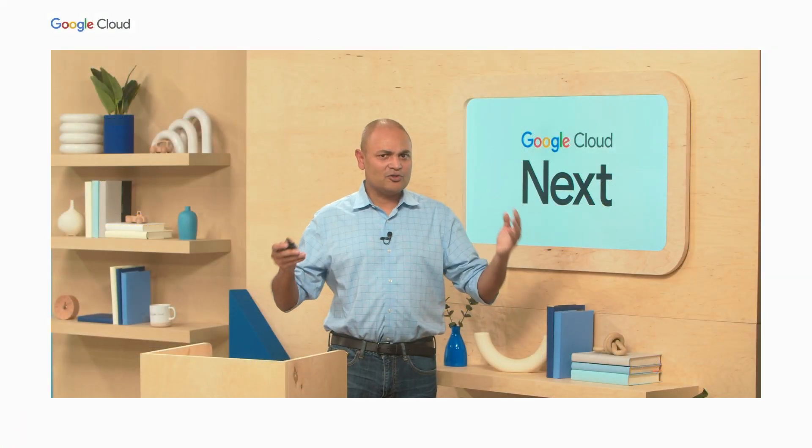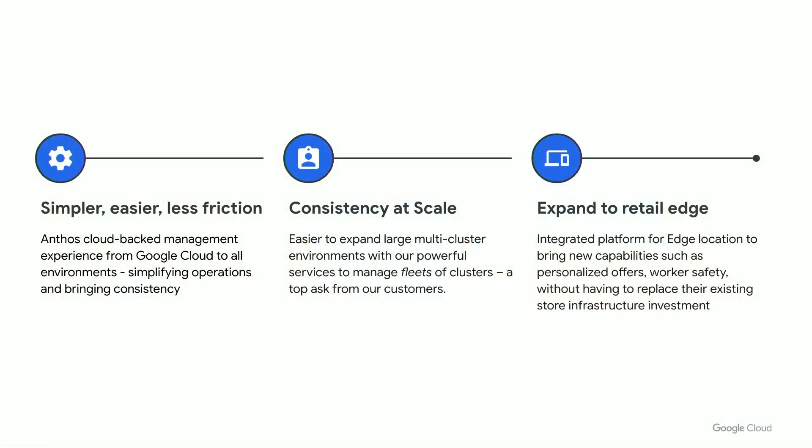So now that we know what Anthos is all about, let's talk about what's new with Anthos. First, we've made it simpler, easier, and with less friction. Number two, we are delivering consistency at scale — meaning multiple clusters, helping your developers focus on developing apps and not the infrastructure. And number three, we can now expand Anthos and GDC to your retail edge locations.